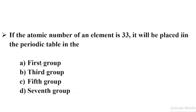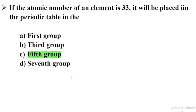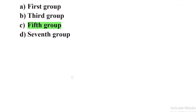If the atomic number of an element is 33, it will be placed in the periodic table — Option C: 5th group. Thanks for watching.